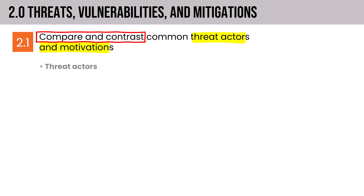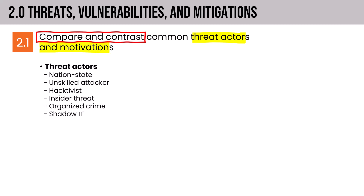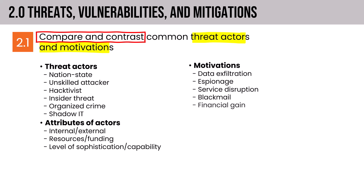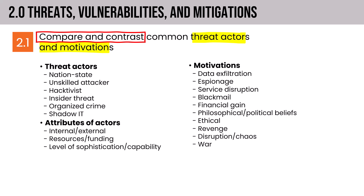We'll look at the types of threat actors out there, from the very sophisticated nation-state to the very unskilled attacker, the script kiddie. We'll look at their attributes — whether they're inside or outside the company — their relative funding levels, level of capability or sophistication, and finally their motivations. I'm going to cover these in a way that makes it easy to map actors to their attributes and motivations as you prepare for the exam.